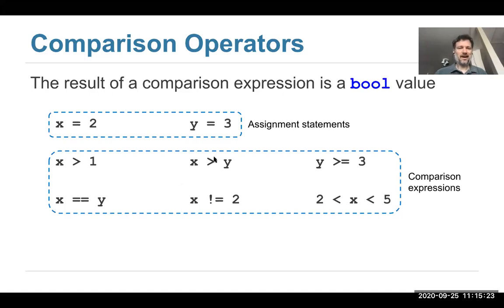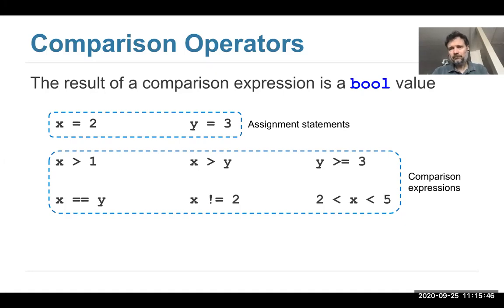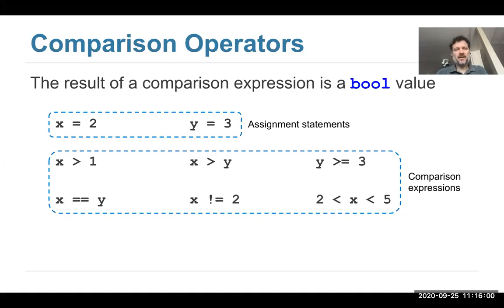You can do many of the obvious things: greater than, greater than or equal to. You can test for equality using a double equal sign. This can be a little confusing — in Python we need to distinguish between an assignment statement, where we assign a value to a name, and a comparison, where we compare two expressions for equality. A single equal sign is for assignment statements and a double equal sign is for comparisons.